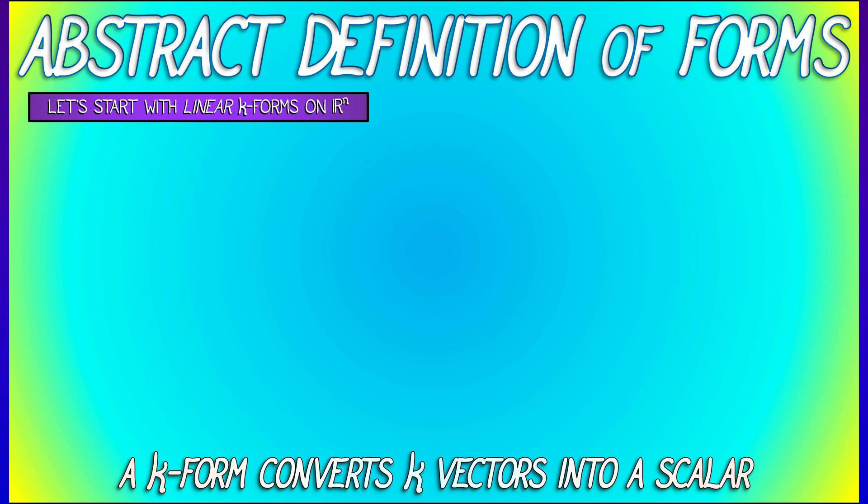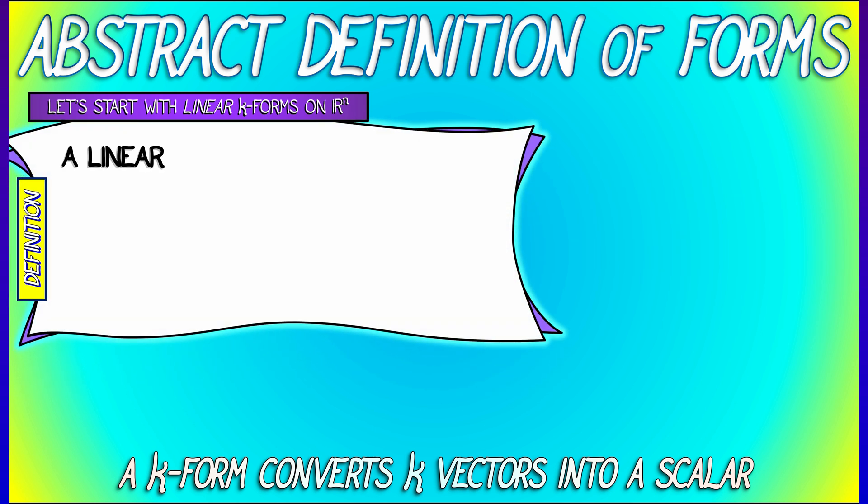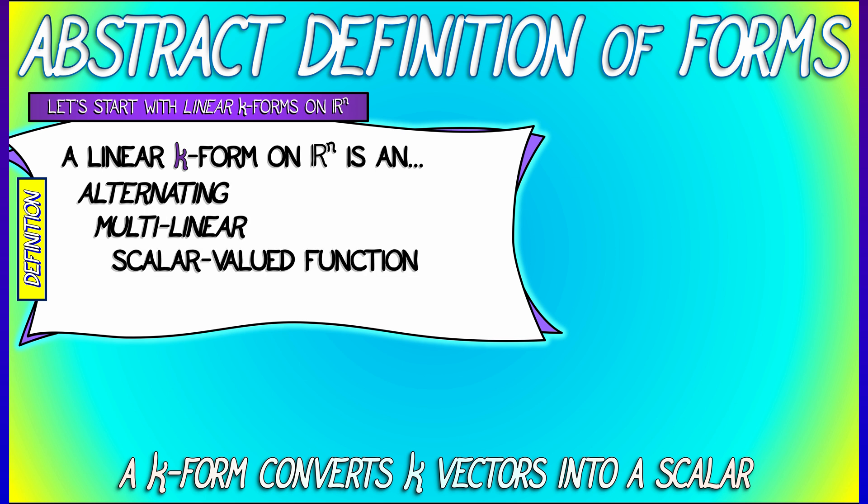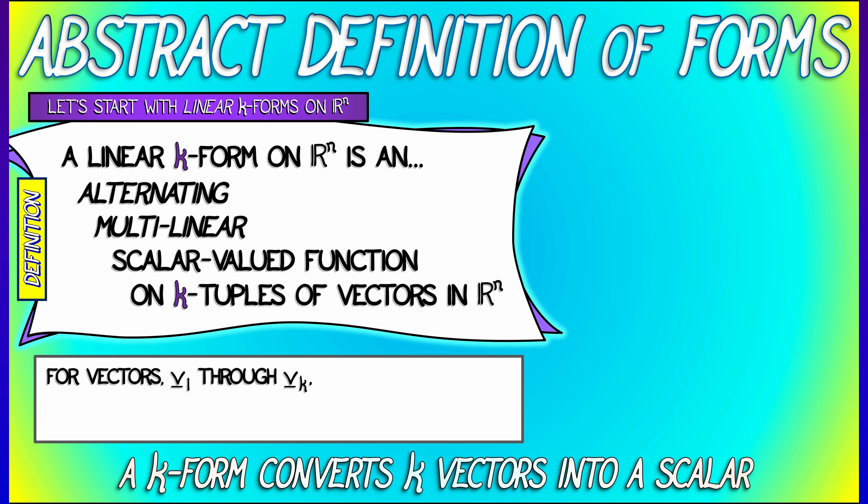So we're going to start with linear k-forms on R^n. A linear k-form on R^n is an alternating multilinear scalar-valued function on k-tuples of vectors in R^n. Let's say that this k-form is alpha, then it eats vectors v1, v2, all the way up through v_k in that order. The order matters. And it spits out a scalar, and it does so in a manner that is alternating and multilinear.